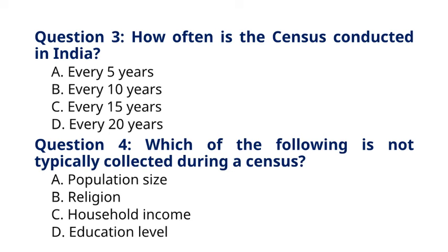Question 4: Which of the following is not typically collected during a census? The correct answer to question 4 is option C: Household Income. Explanation: While census data includes population size, religion, and education level, household income is usually not directly collected.